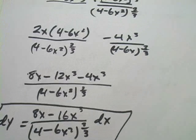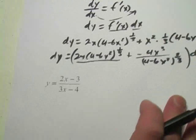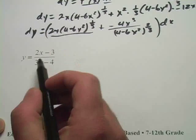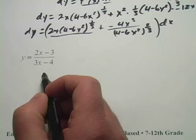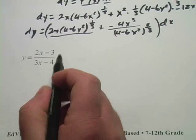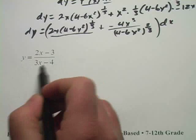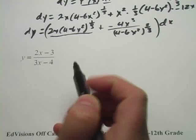A little bit of work there. Let's try the next one. We have y = (2x - 3)/(3x - 4). We'll use the quotient rule here to take the derivative. To find dy, we'll take the derivative and then add a dx.